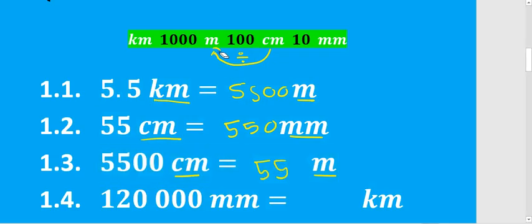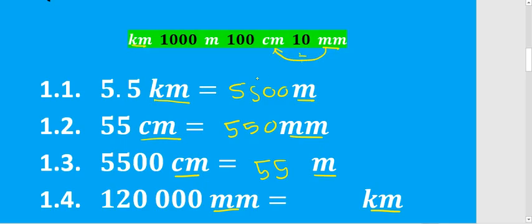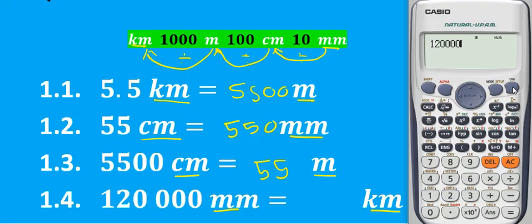For 1.4 we want to convert millimeters all the way to kilometers — but we cannot jump. We need to take all the steps. First divide by 10 to get to centimeters, then divide by 100 to get to meters, then divide by 1000 to get to kilometers. Starting with 120,000, doing all those steps gives us 0,12 kilometers.